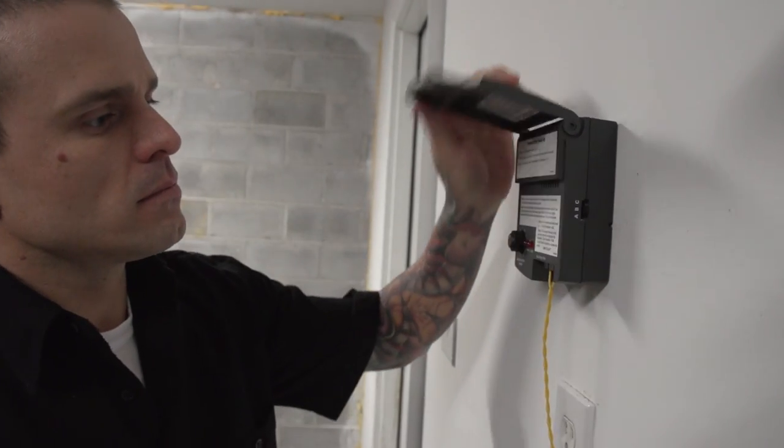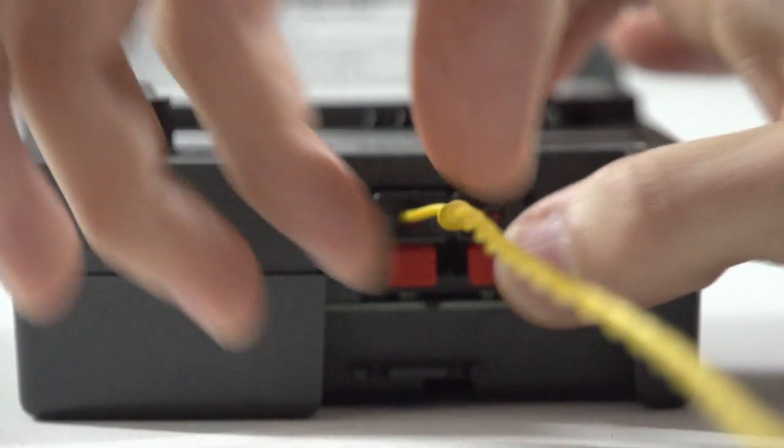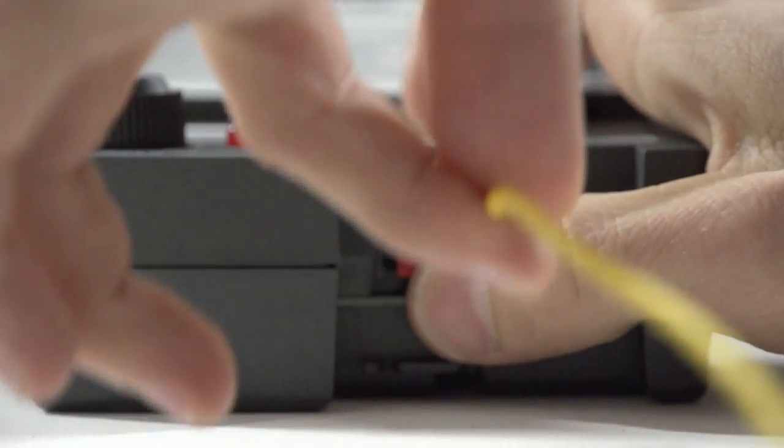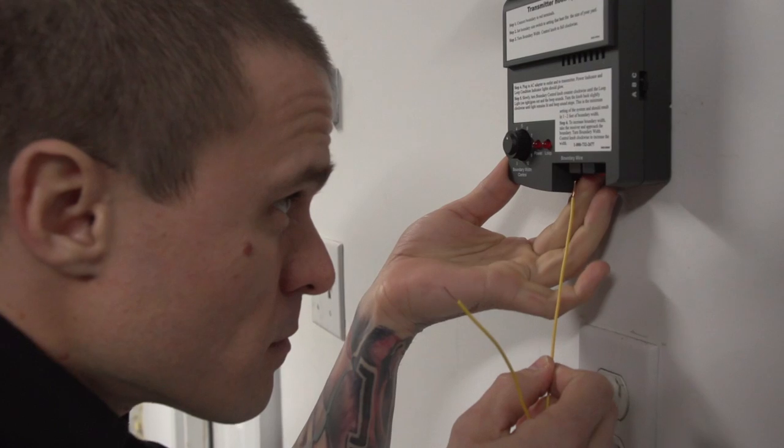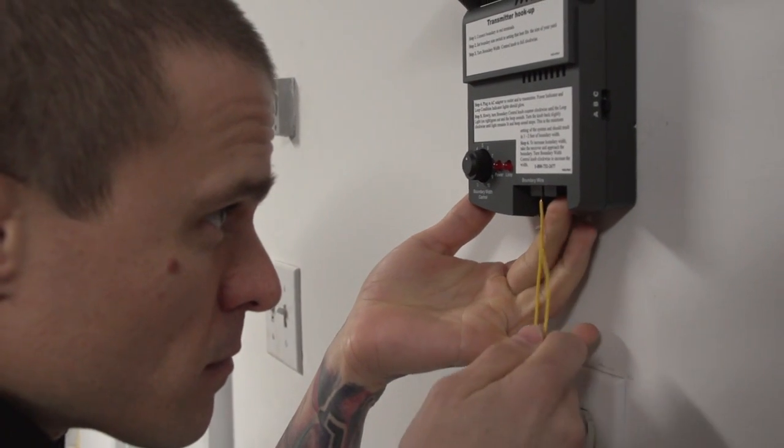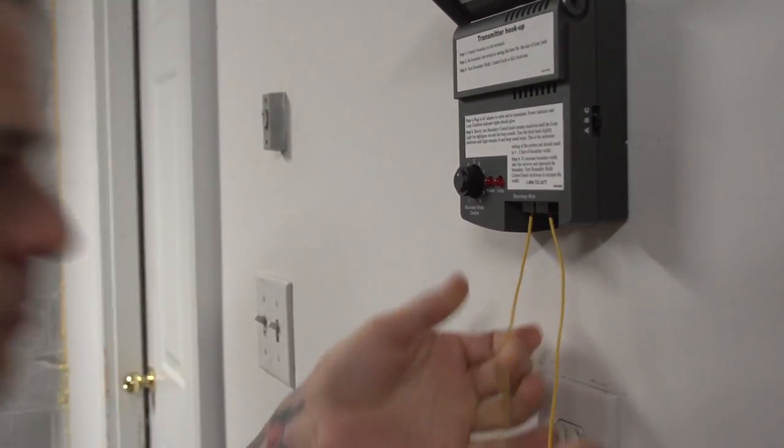Next, disconnect the twisted boundary wire from the terminals on the fence transmitter by pressing the release levers on the connector and pulling the wires free. Insert the two ends of the test loop wire into the boundary wire terminals on the transmitter.